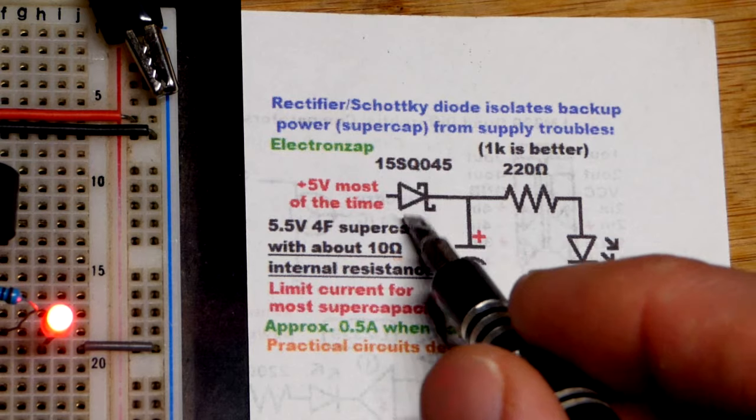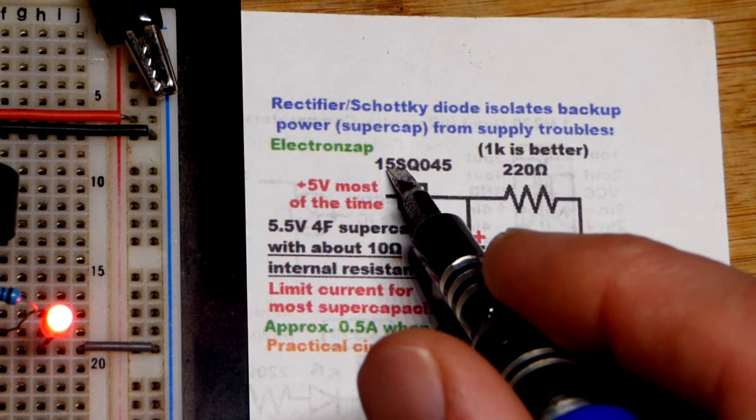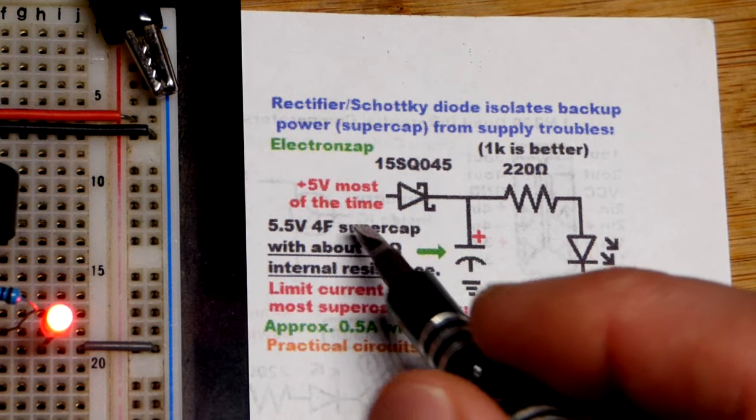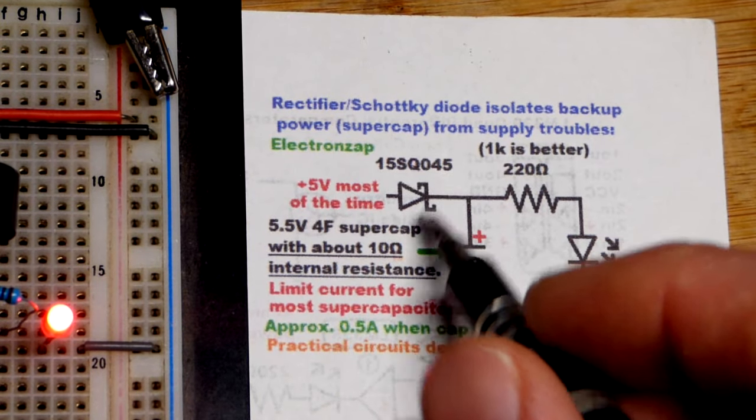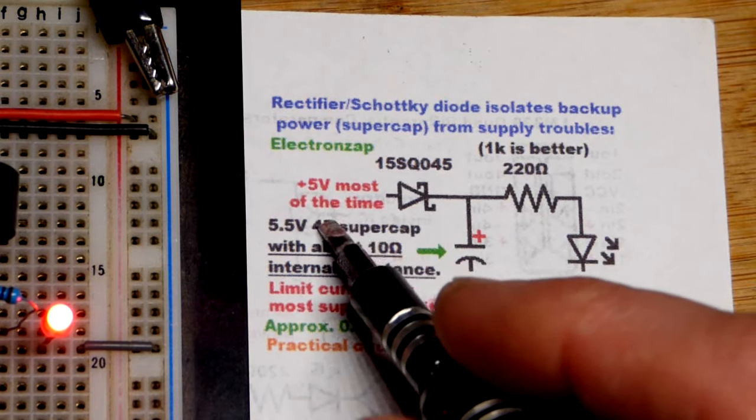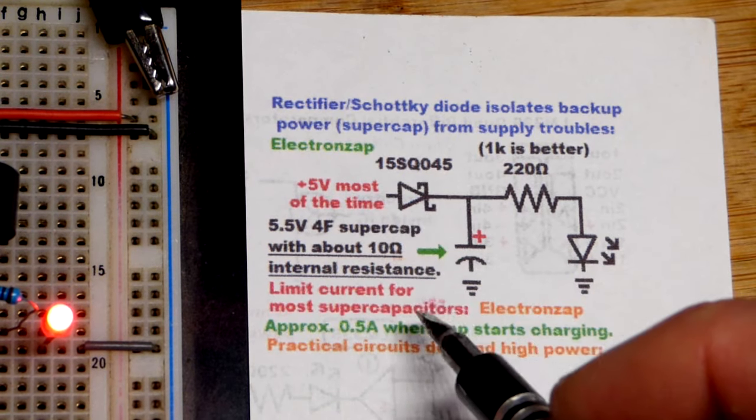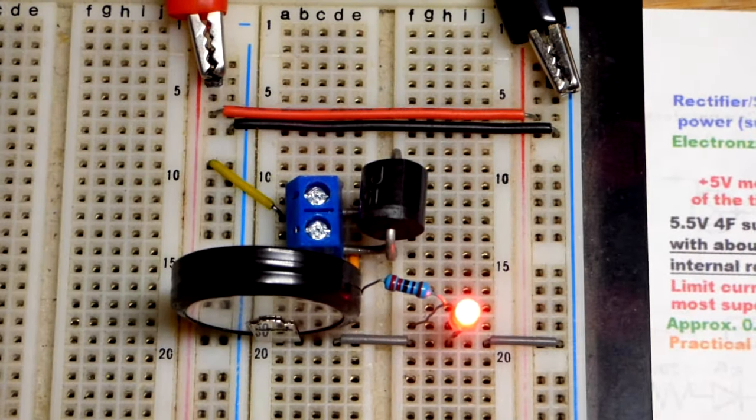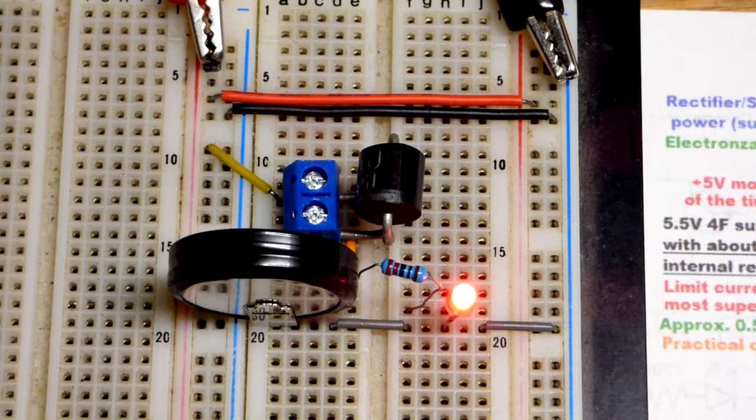That's the total part number for the component. Up to 15 amps, up to 45 volts when it's reverse bias, when it's blocking. It can't block as much as most rectifier diodes. In any case, this one we're going to keep 5 volts most of the time. This particular supercapacitor can handle about 5.5 volts. That's what it's rated for.